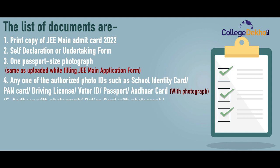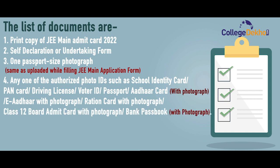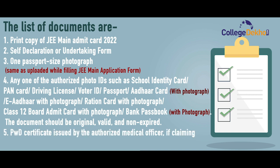Other accepted photo IDs include Aadhaar card with photograph, e-Aadhaar with photograph, ration card with photograph, Class 12 board admit card with photograph, or bank passbook with photograph. The document should be original, valid, and non-expired. Candidates claiming relaxation under the Person with Disability category must also carry a PwD certificate issued by the authorized medical officer.